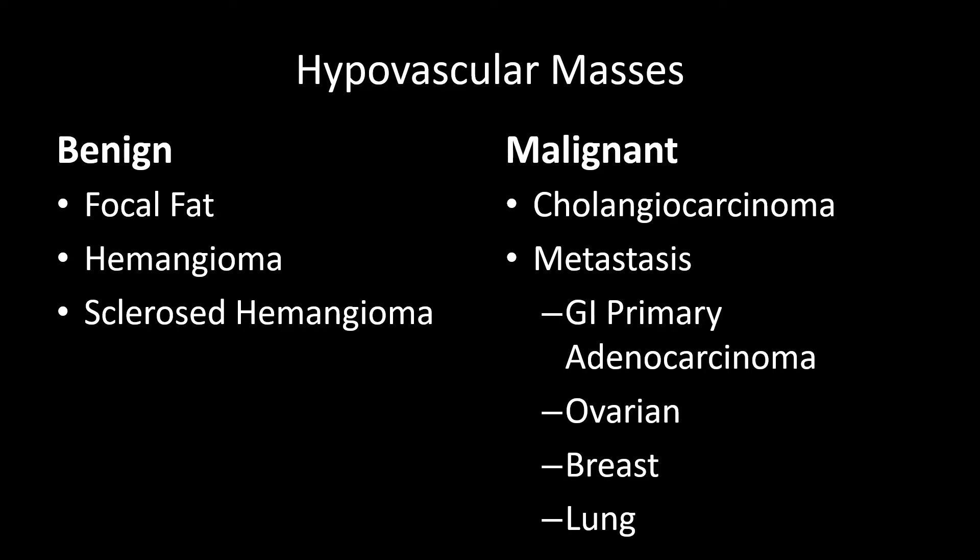When thinking about malignant hypovascular masses, the main primary malignancy within the liver would be cholangiocarcinoma, and the secondary malignancies are metastases. Adenocarcinoma metastasis from any primary will have a similar appearance to cholangiocarcinoma within the liver.